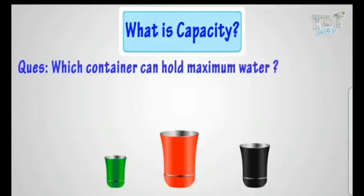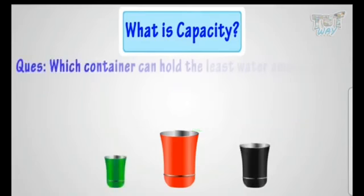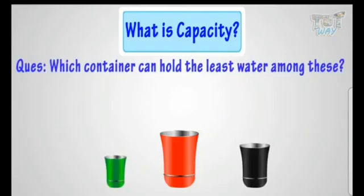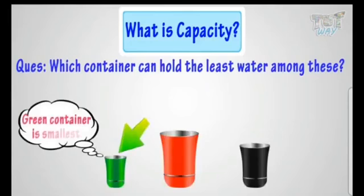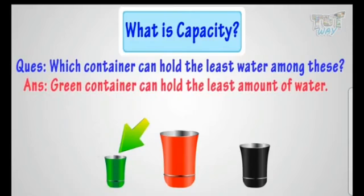Now, can you tell which container can hold the maximum water? A red container can hold the maximum amount of water, so we can say that the red container has maximum capacity. Now take one more example: can you tell which container can hold the least water among these? The green container is the smallest one, so it will contain the least amount of water.